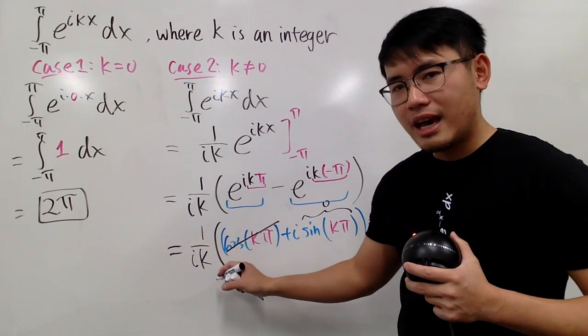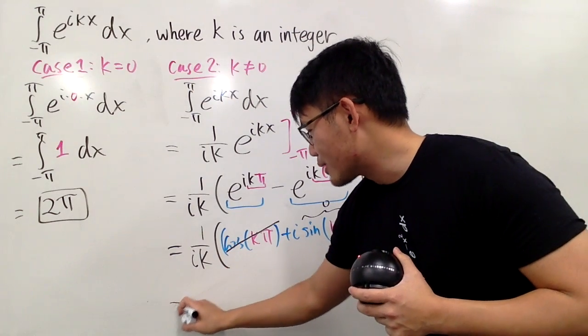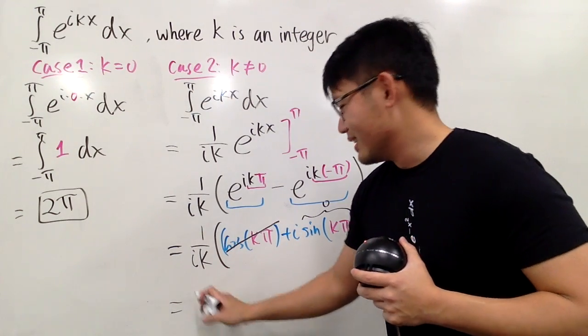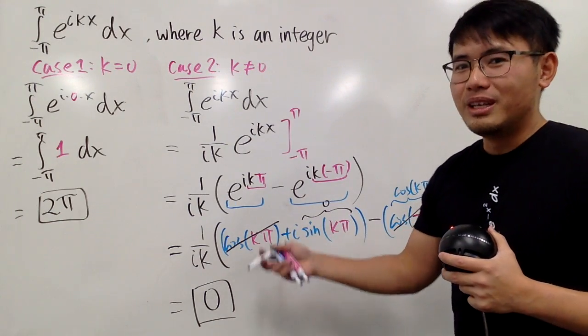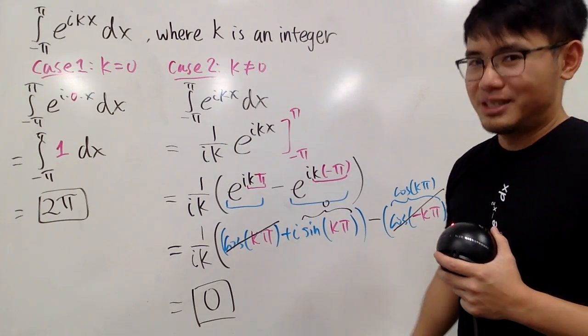So, you have 1 over ik times zero. So, you actually just end up with zero. So, the answer to this right here is actually just zero, if k is not equal to zero, right?